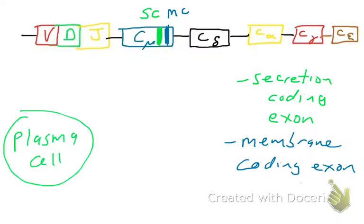Now let's say the B cell becomes activated and differentiates — it turns into a plasma cell, which is the type of B cell that secretes antibody. So this B cell is going to go from having membrane-bound IgM to secreting IgM. IgM is great for combating infection and activating complement via the classical pathway. So how does the cell switch from membrane-bound IgM to secreting IgM?